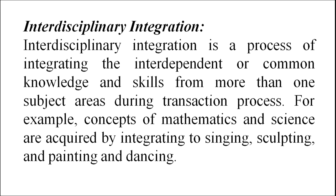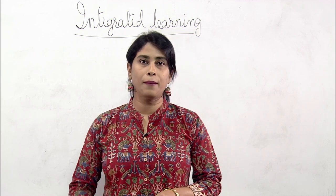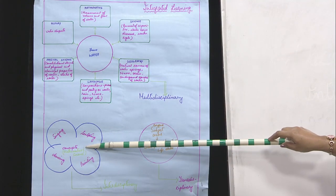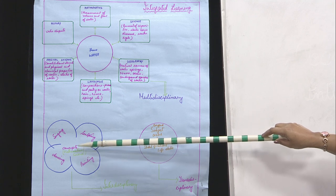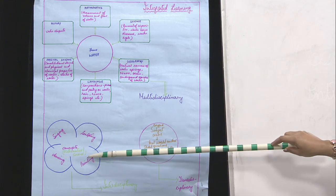Now let us discuss about interdisciplinary integration. Interdisciplinary integration is a process of integrating the interdependent or common knowledge and skills from more than one subject area during the transaction process. For example, concepts of mathematics and science are acquired by integrating them with singing, sculpting, painting, and dancing. In this figure, the main theme is mathematics and science, and the teachers relate these subjects through singing, sculpting, painting, and dancing. This is called integration of subjects.